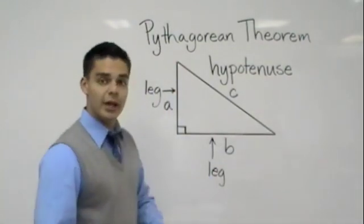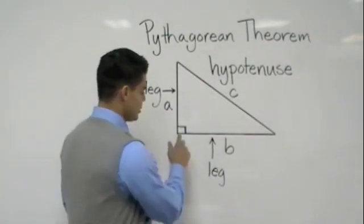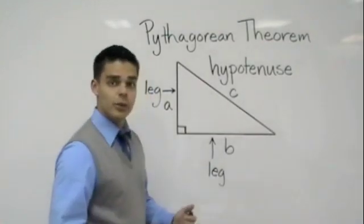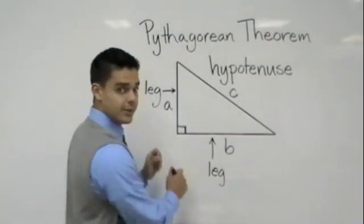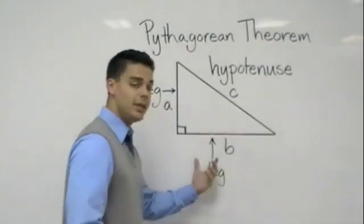Whenever we're talking about a right triangle, how do I know it's a right triangle? Because there's a right angle in there, which is 90 degrees. I know that there are going to be two short legs, we're going to call them leg A and leg B,